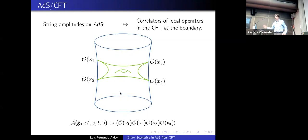If we want to compute the amplitude of four points as shown here, this maps to a four-point correlator at the boundary.